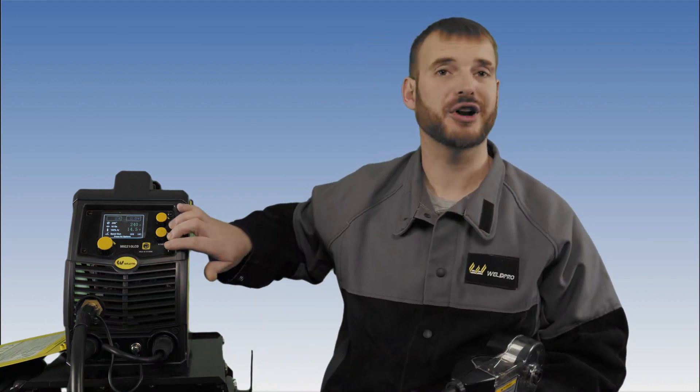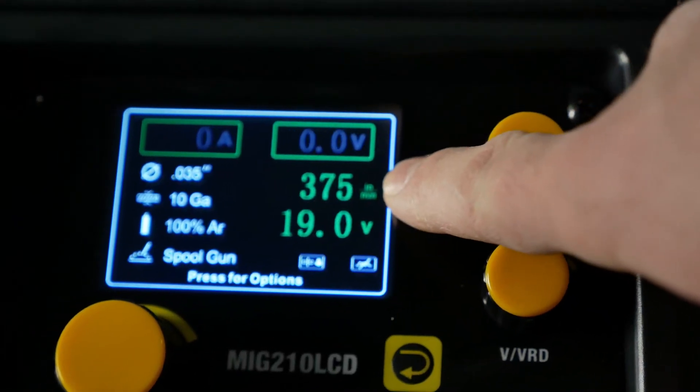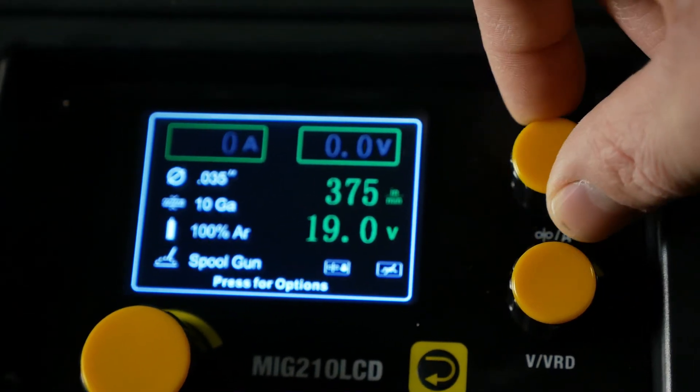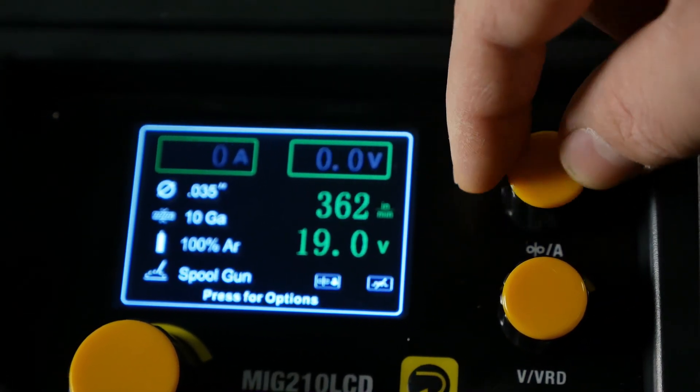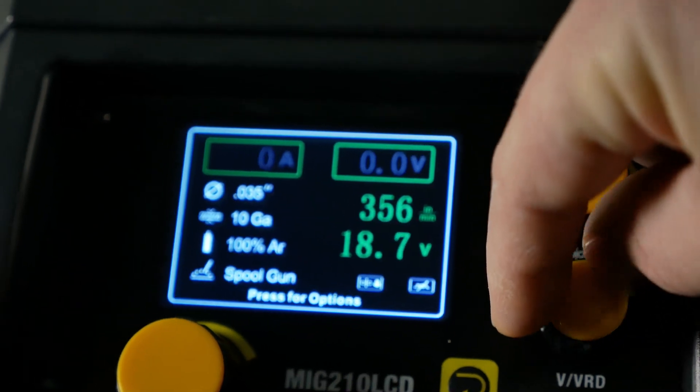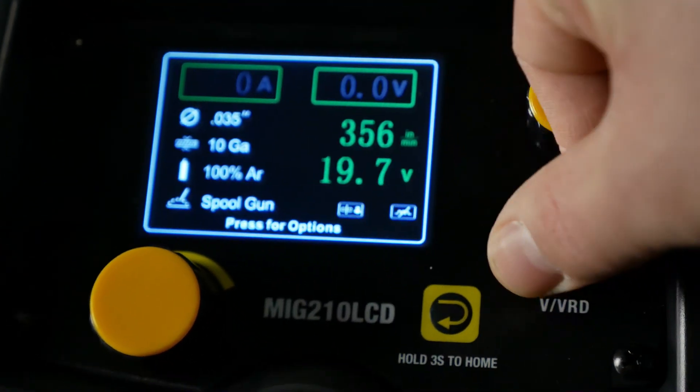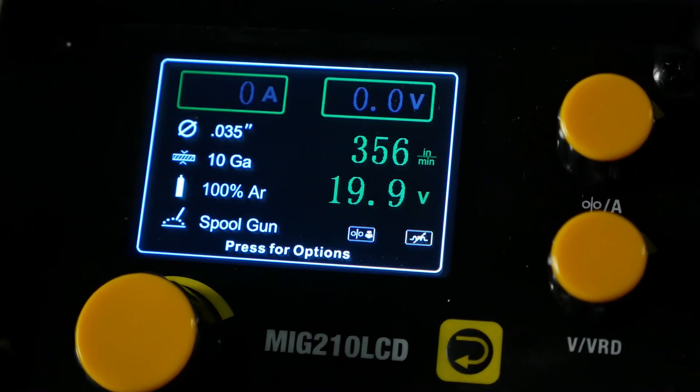Once we've gone through the menu and set our series of aluminum, we're now ready to make wire speed and voltage adjustments on the front of the machine. The great thing about the display on the MIG 210 LCD is that at a glance, it reads out all of the information regarding your electrode and welding process. The two small knobs on the right-hand side of the display will be your voltage and wire speed controls.